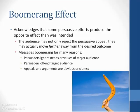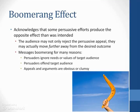Our sixth theory is really less a theory than an outcome. The boomerang effect acknowledges that some persuasive efforts actually produce the opposite effect from what was intended. Not only does the audience reject the persuasive appeal, but they may actually move farther away from the desired outcome than they were before the persuasive message was sent. Messages can boomerang for many reasons. Three important reasons include: persuaders sometimes ignore the needs or values of the target audience; sometimes persuaders offend their audiences; and sometimes they use appeals or arguments that are simply too obvious or clumsy. In other situations, there's really no way to tell what causes a particular audience or individual to boomerang away from the intended effect.